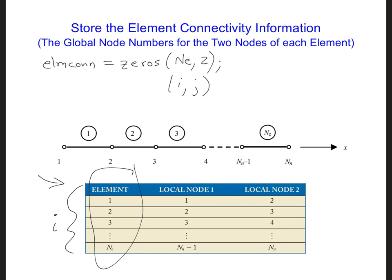And when the second index, when j equals 1, we have the first node of the element. The numbers stored in the element connectivity matrix are the numbers here.